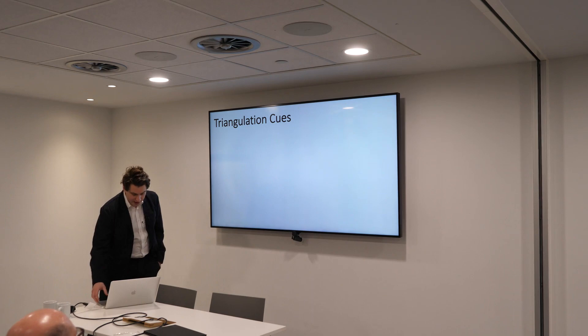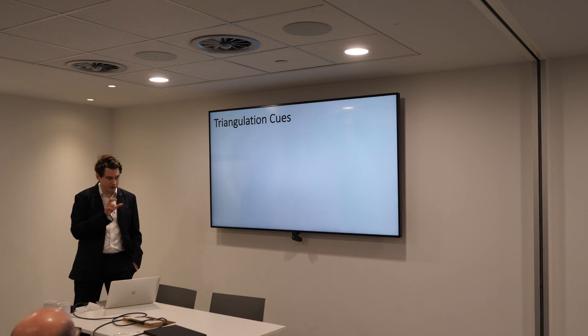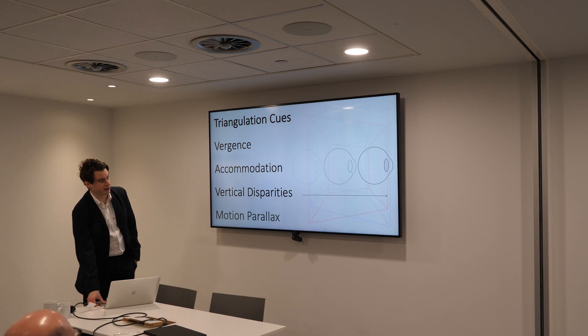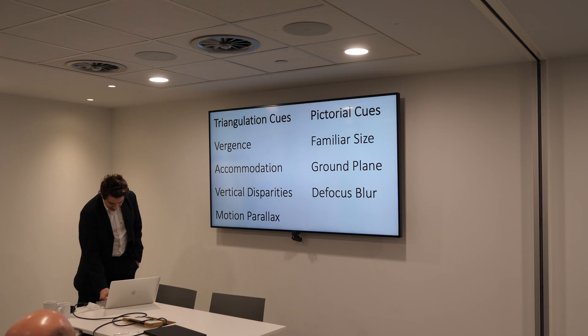The other approach is to say this is an ill-posed problem, and it tries to move us away from the static monocular retinal image by introducing multiple viewpoints — either from binocular vision or from the motion of the observer. Here you can have vergence, accommodation, vertical disparities, and motion parallax.